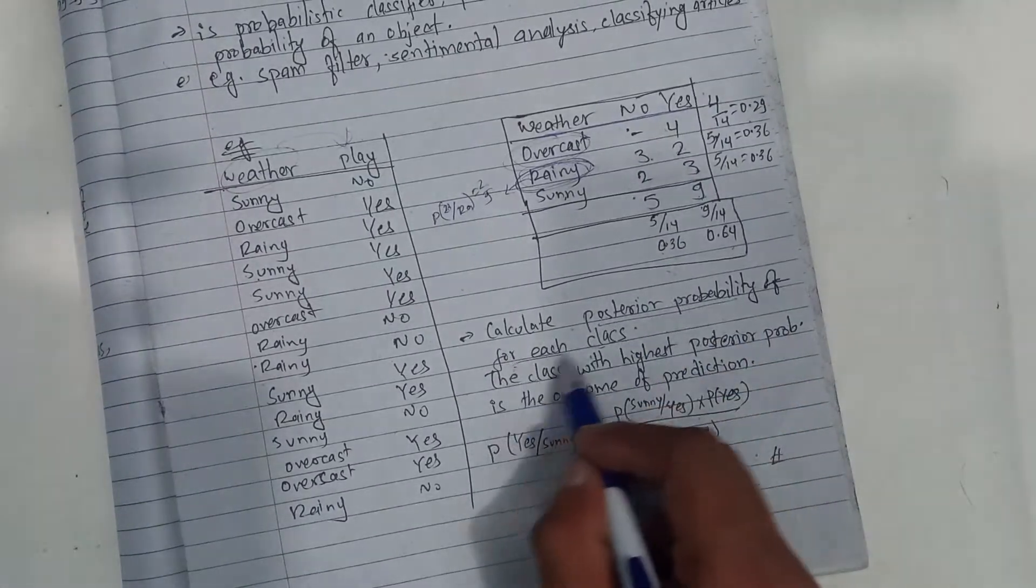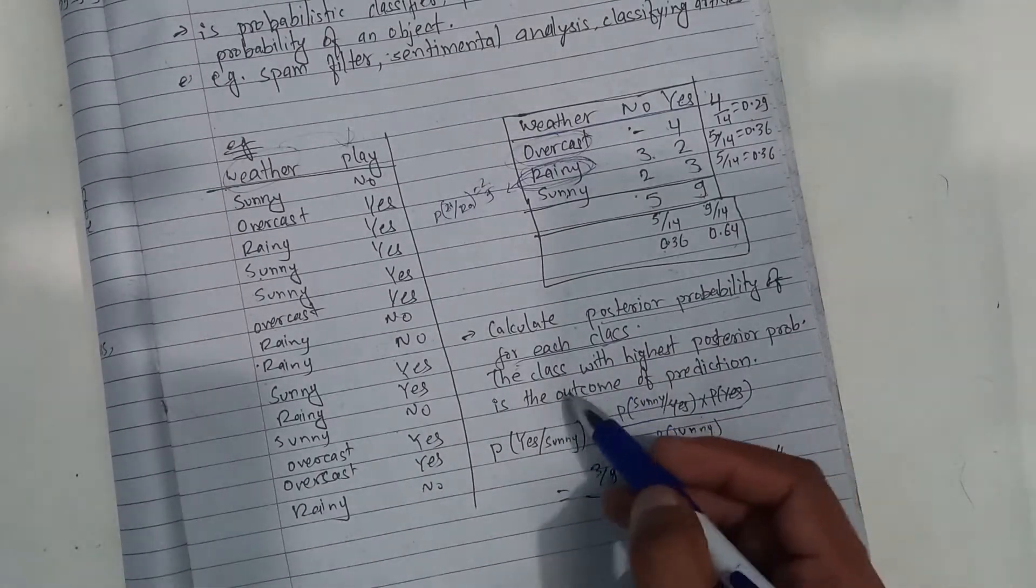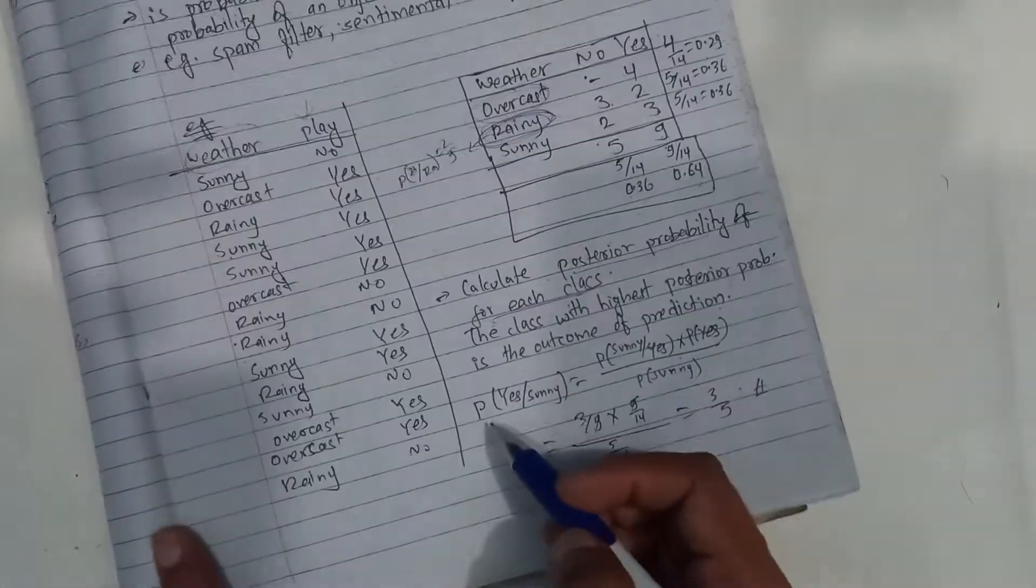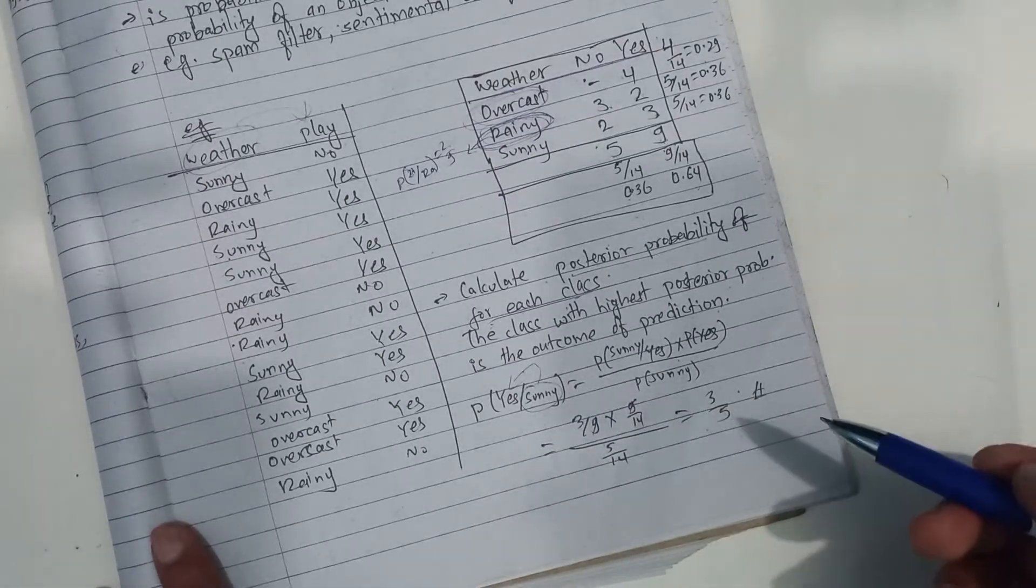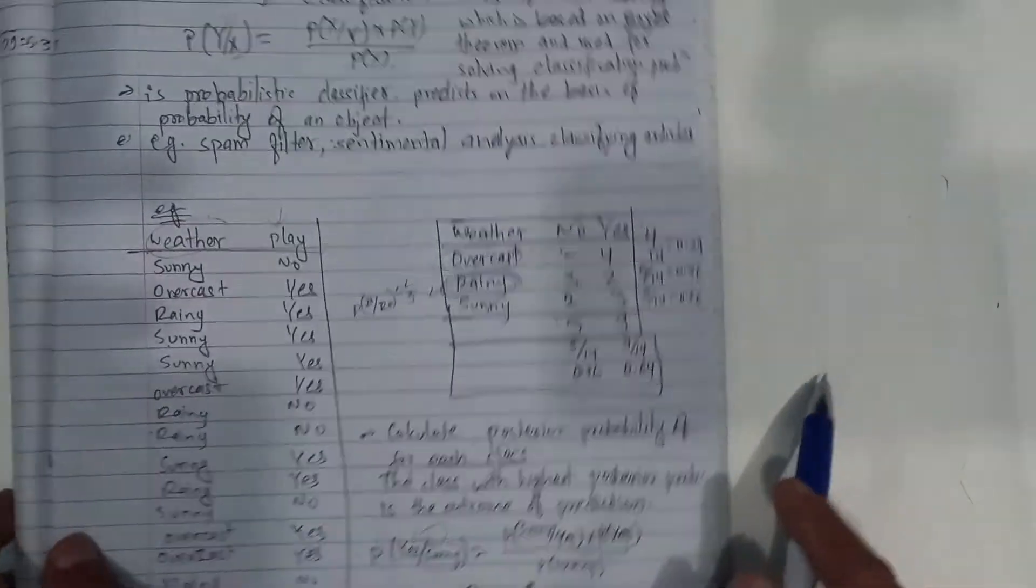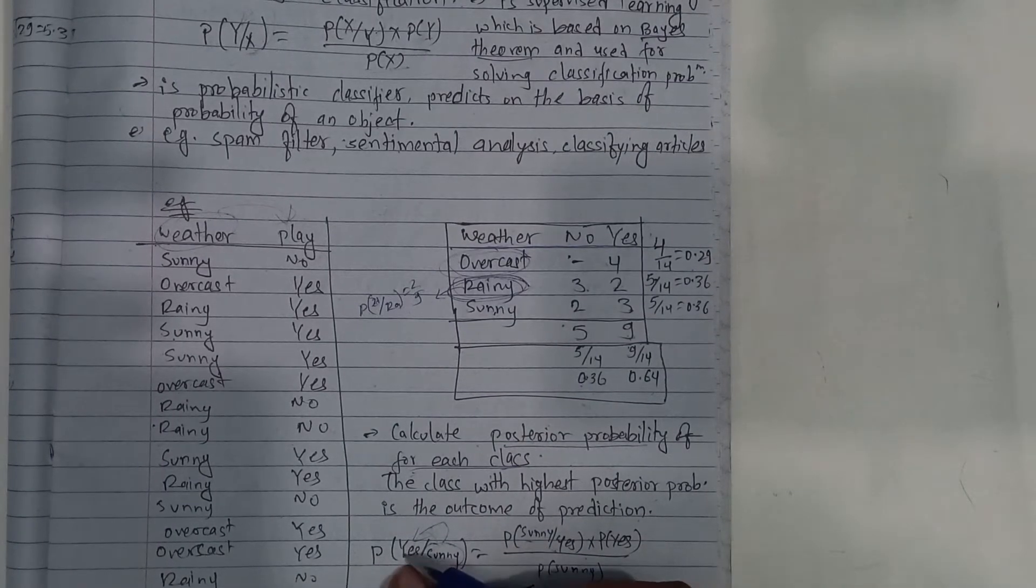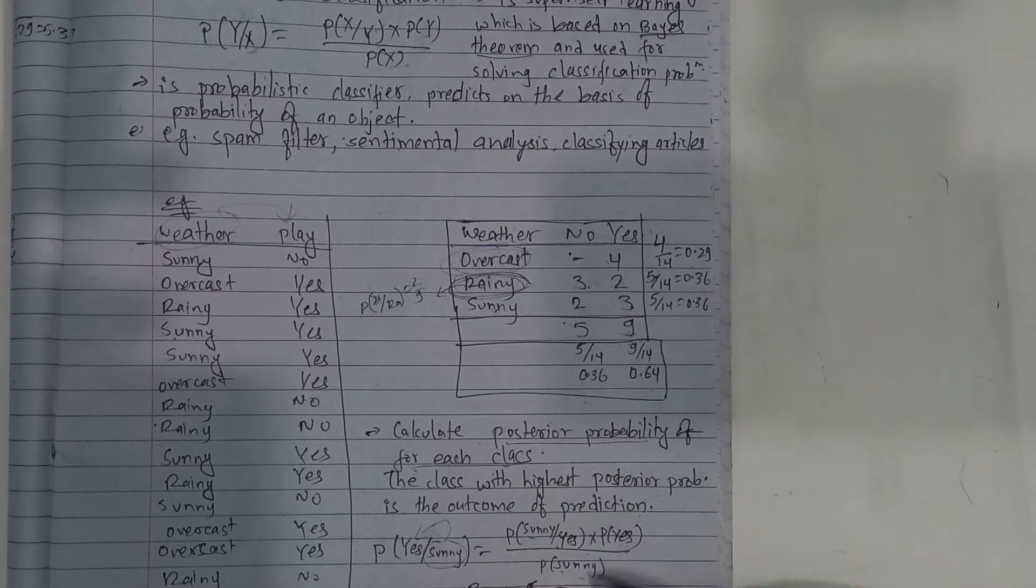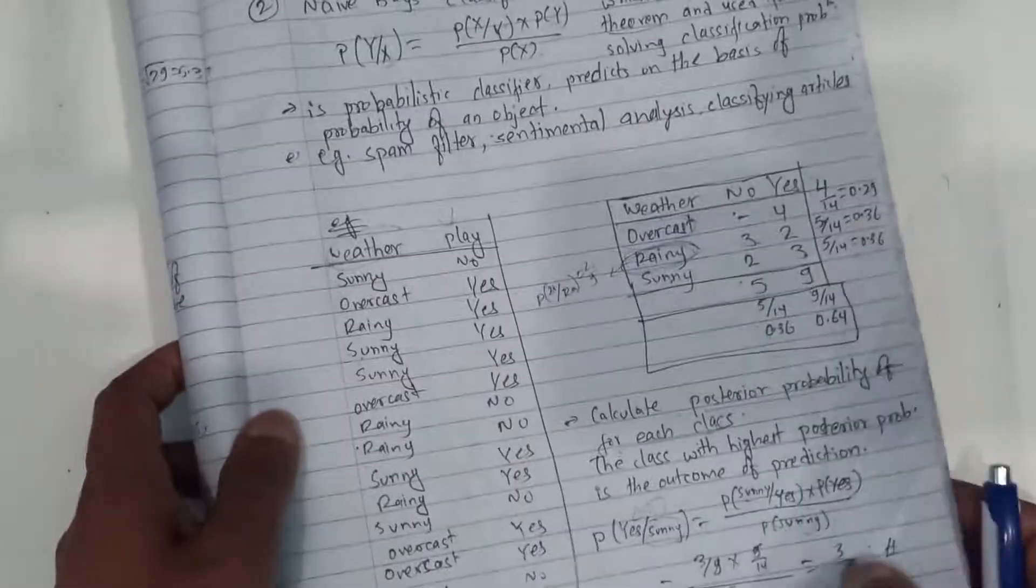The class with the highest posterior probability is the outcome of prediction. For example, on a sunny day, we calculate the probability of playing the game: P of sunny given yes, and the way the classifications are made is the best way using Bayes.